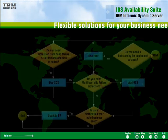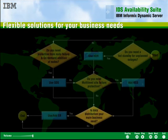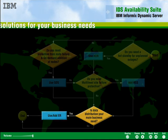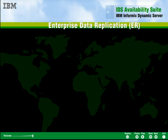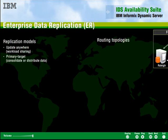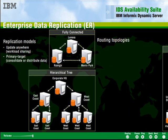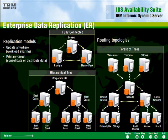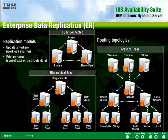So how is this different from the existing enterprise replication capabilities in IDS? Use enterprise replication, or ER, for data distribution across different database schemas, or when you want to consolidate or distribute data that is independent using customized business rules. ER configurations can run either standalone or be part of other high availability options.